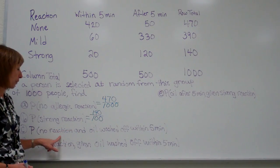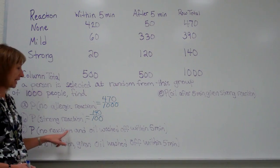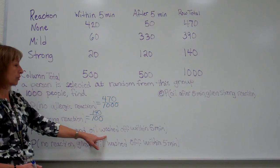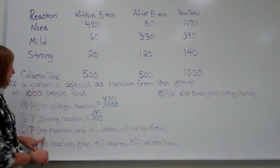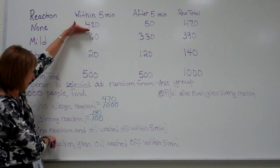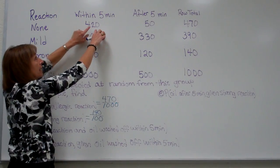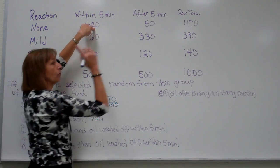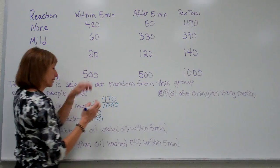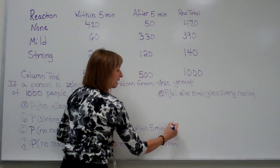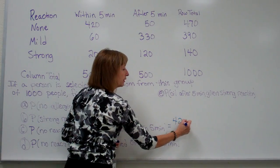The number of subjects that met both requirements of no reaction and the oil is washed off within 5 minutes has to be across from the none as well as underneath the washed off within 5 minutes. So that would be 420 out of the total group of 1000. So that would be the answer to that probability question.